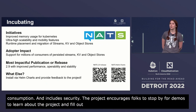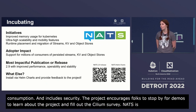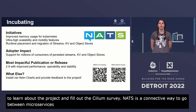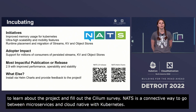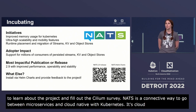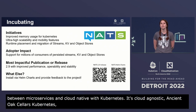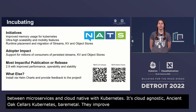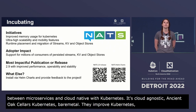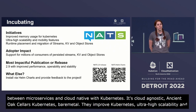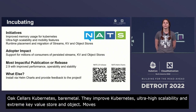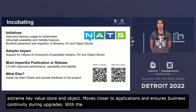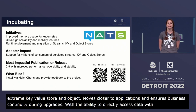NATS is a connected fabric to exchange data between digital endpoints — from microservices to modern cloud native applications and Kubernetes. It's cloud-agnostic and can be deployed anywhere to bridge Kubernetes, bare metal, VMs, and low-resource hardware. Top initiatives include improving memory usage for Kubernetes, ultra-high scalability and mobility features, and runtime placement and migration of stream, key-value store, and objects. This moves data closer to applications and ensures business continuity during upgrades.